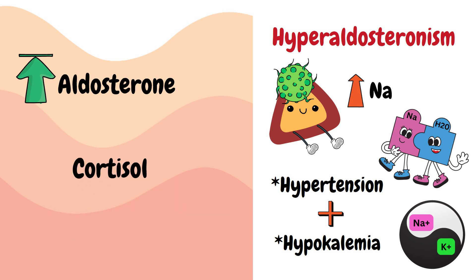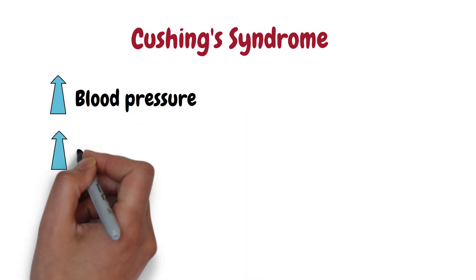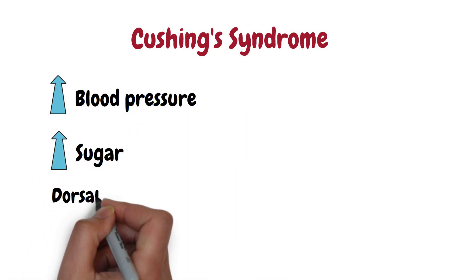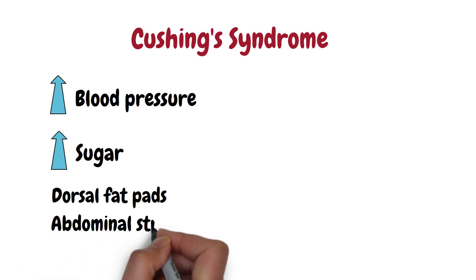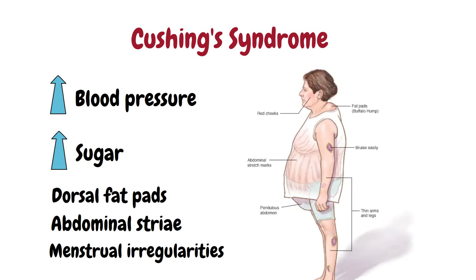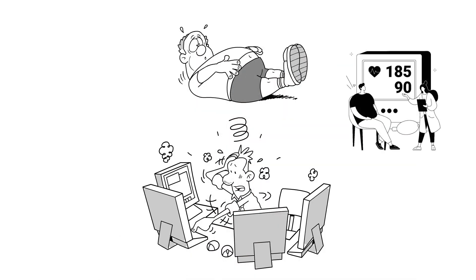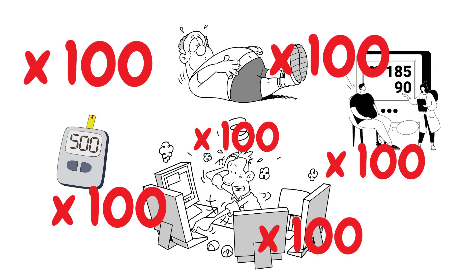Similarly, an overproduction of cortisol can lead to Cushing's syndrome, again caused by a tumour in the adrenal gland — though there are several other causes we will discuss in upcoming videos. Cortisol is a stress hormone, so high levels can raise blood pressure, blood sugar, and cause characteristic findings such as dorsal fat pads, purple abdominal striae, weight gain, and menstrual changes. Think of all the things that happen to you when you're super stressed during an exam — times a hundred is Cushing's.